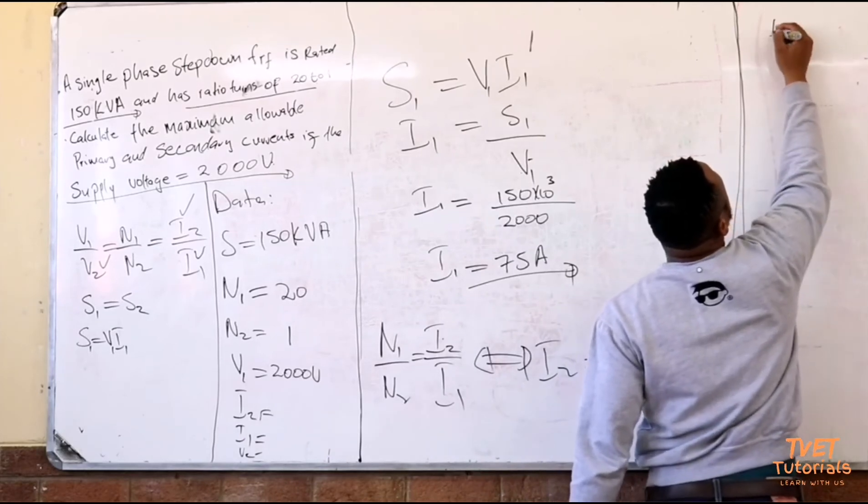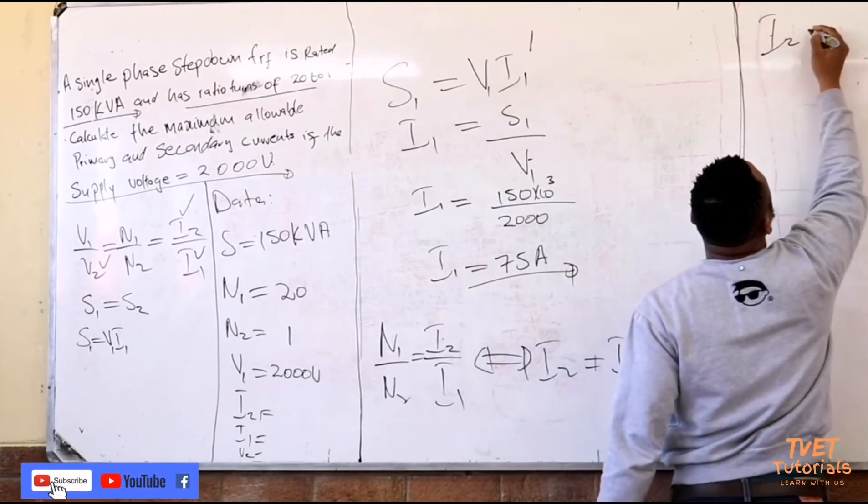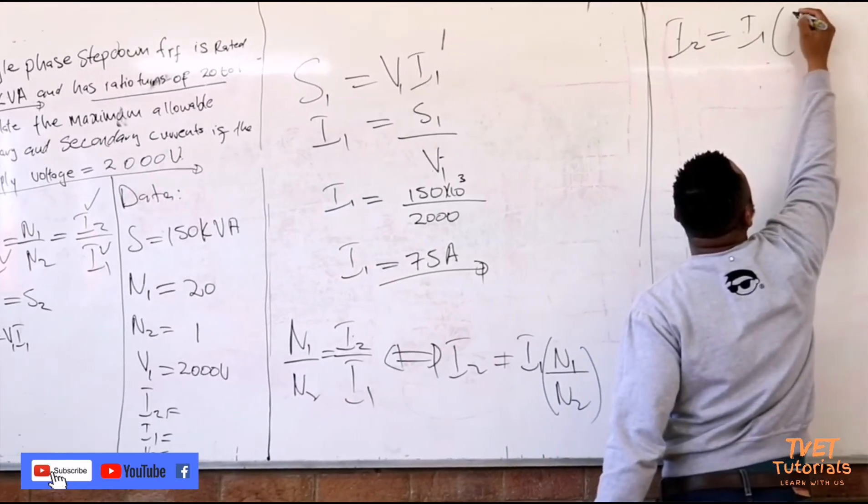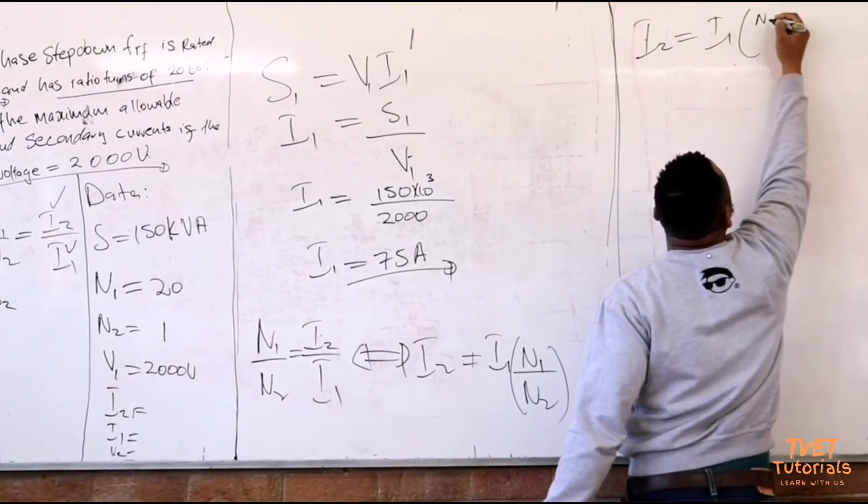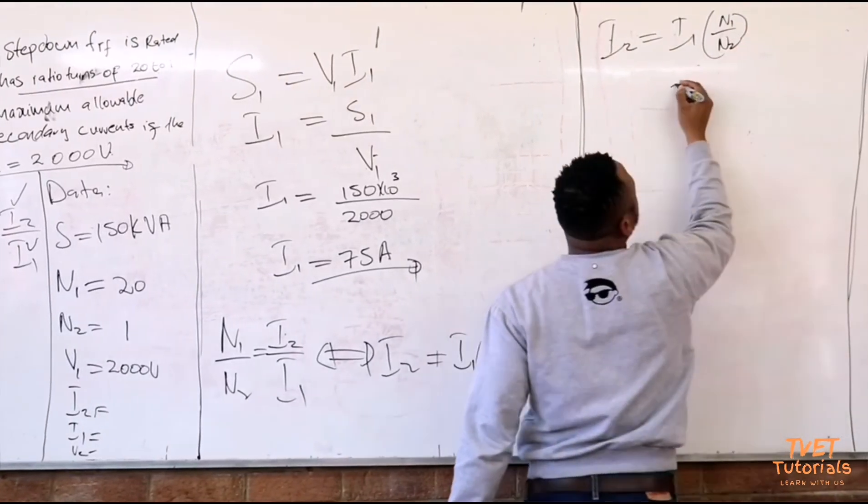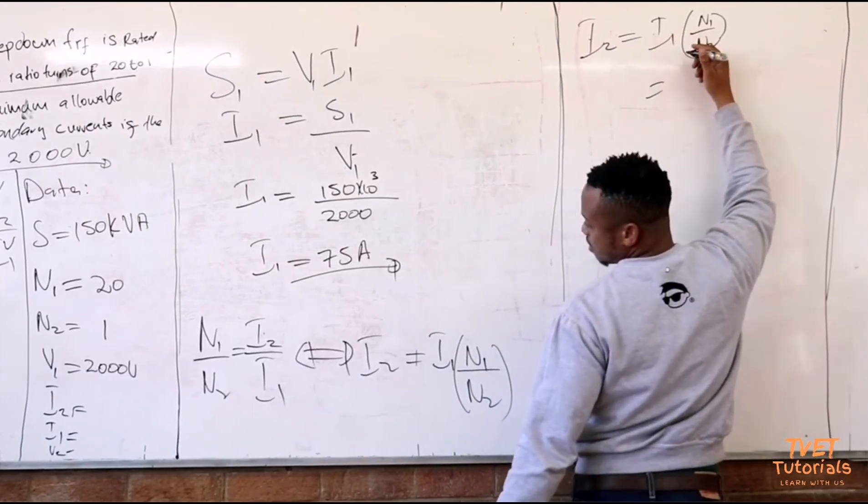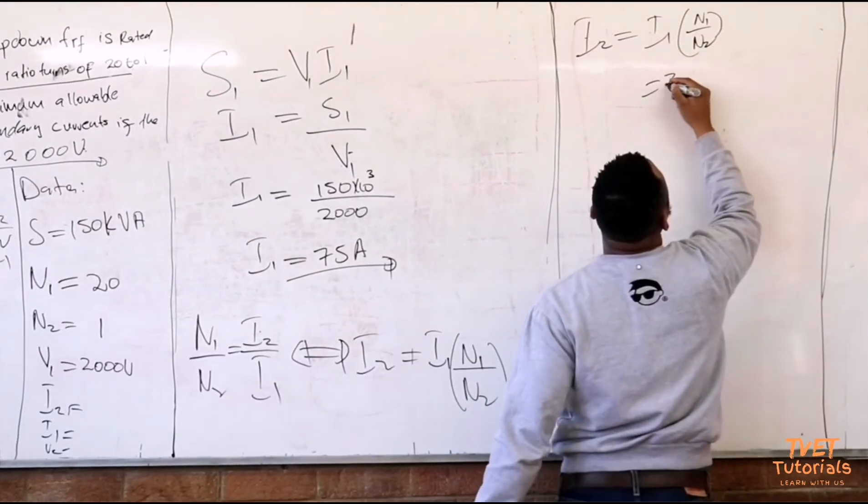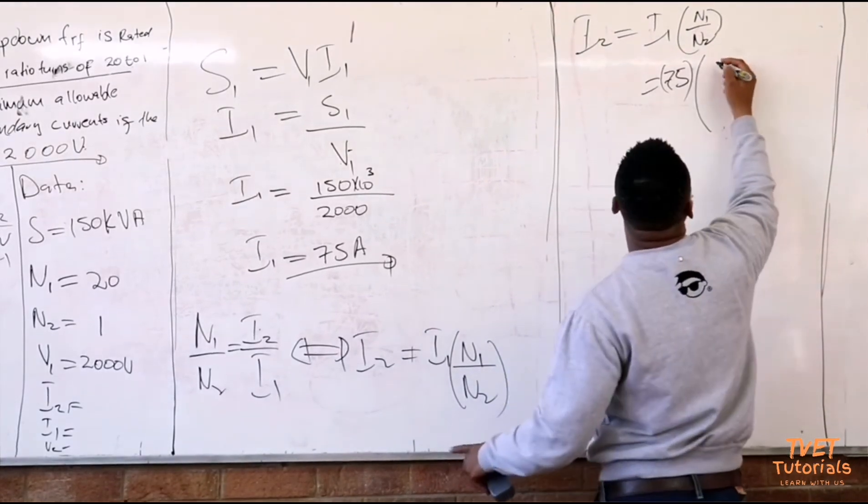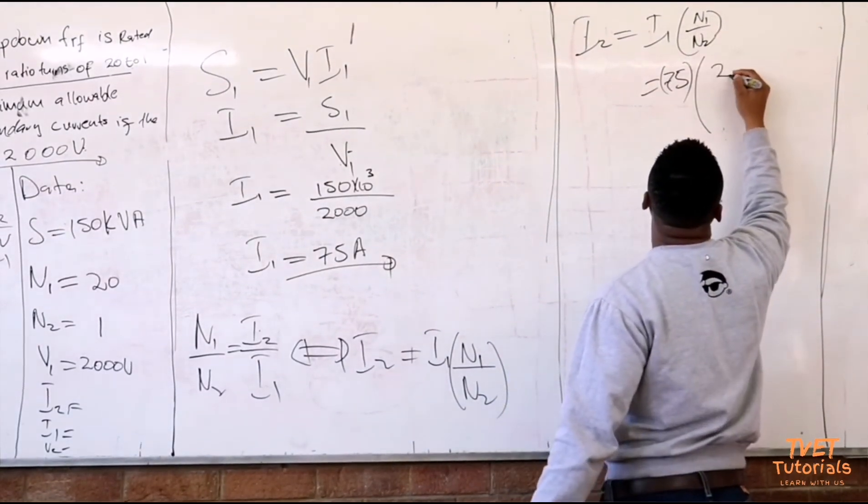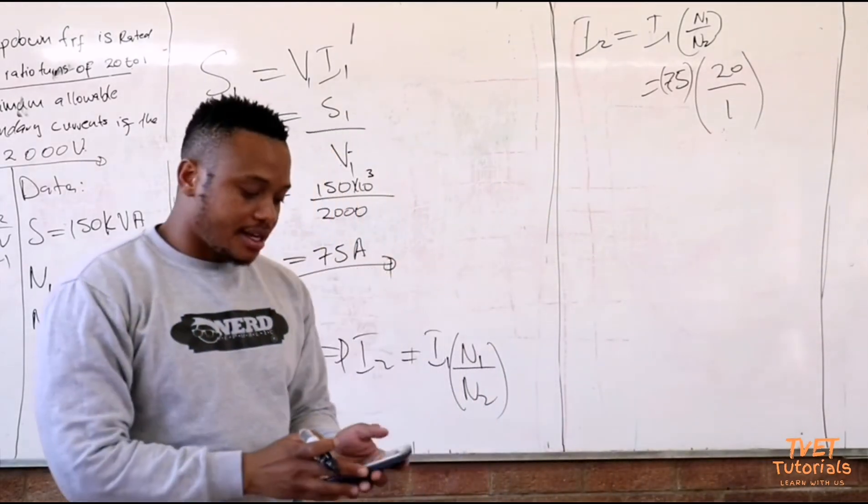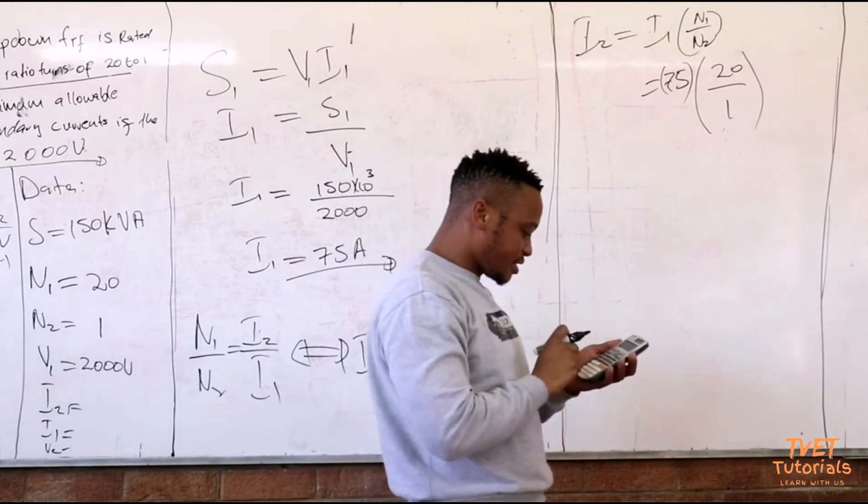So i2 is then equal to i1 multiplied by the transformation ratio of n1 over n2. If I substitute the values, i1 is 75 amperes multiplied by n1. The transformation ratio is 20 is to 1. Then you take your calculator and punch those numbers in.